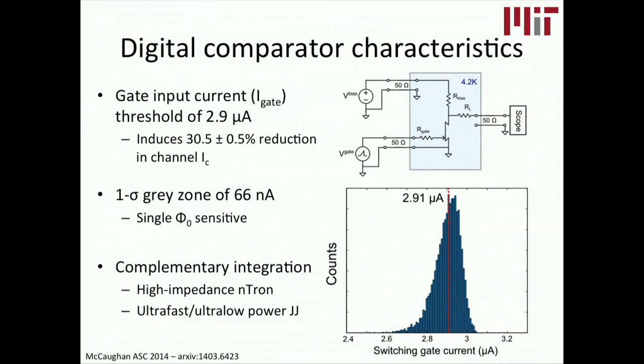Without going into too much of the details, we actually tested one of these digital comparators that I was demonstrating before. And for one of the devices we found, we increased the gate until we saw that hotspot and we saw that switching effect again and again. And what we saw was that we had a median gate current that we needed to induce that hotspot of about 2.9 microamps.